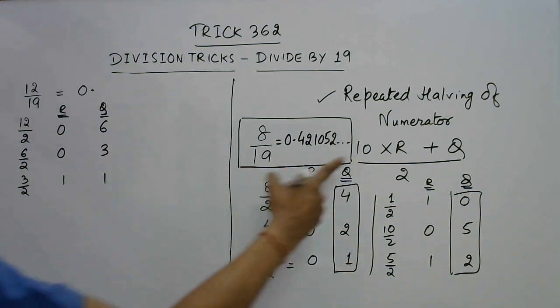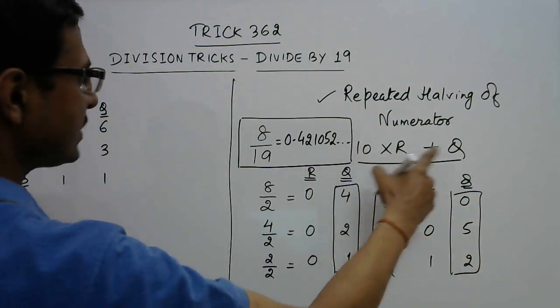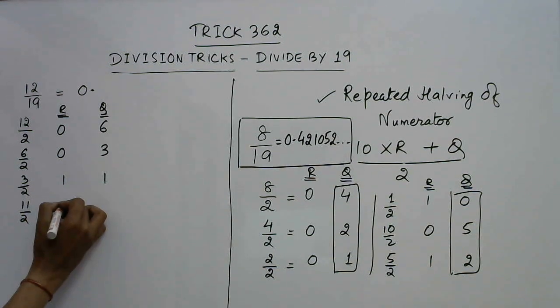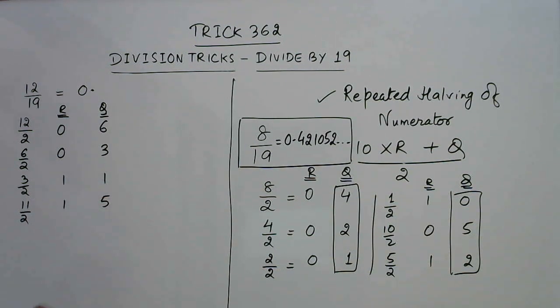Now if you put this here, 10 into 1 plus 1 is 11. So 11 by 2 gives a remainder 1, quotient 5. Again put it here, see 10 into 1 plus 5 is 15. So 15 by 2 gives a remainder 1, quotient 7.